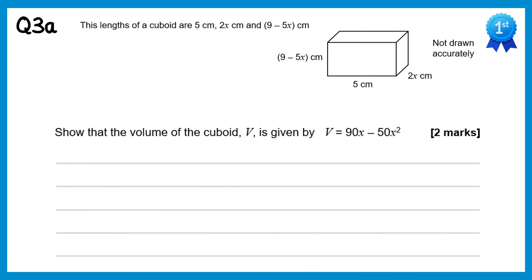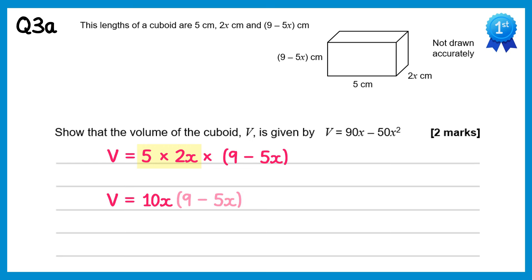In this question we need to find the volume of a cuboid. To find the volume you just multiply the lengths together. So volume equals 5 times 2x times (9 minus 5x). Multiplying the first two terms: 5 times 2x is 10x, and then expanding the bracket: 10x times 9 is 90x and 10x times minus 5x is minus 50x squared. And this is what we needed to show.